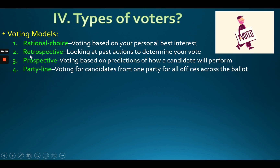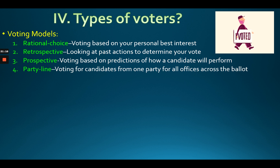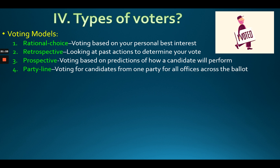Think of the word 'retro' — it means the past. Retrospective voters judge a candidate based on their past actions: 'This person did a good job, so I'm going to vote for them.' Then there's prospective voting — 'pro' meaning forward — that's when you say 'I'm going to vote for this person because they're going to do a good job.' Retro is backward; prospective is forward-looking.